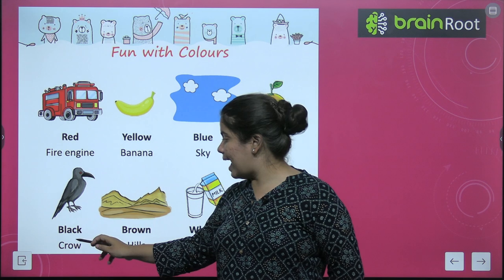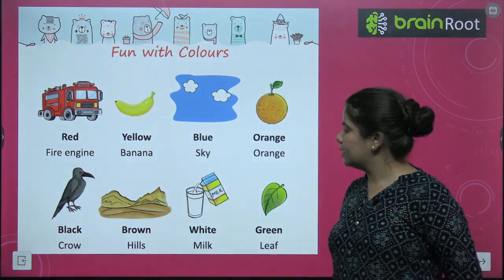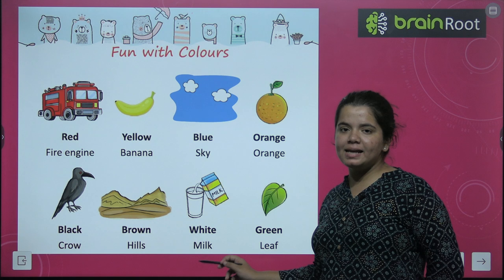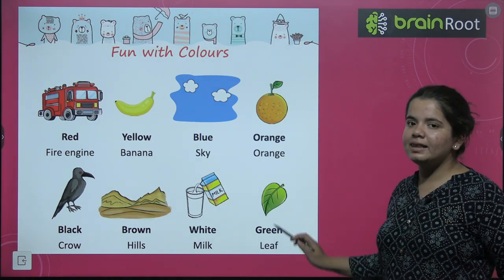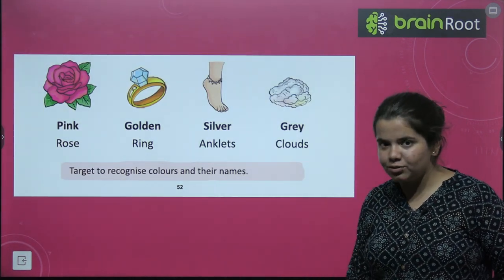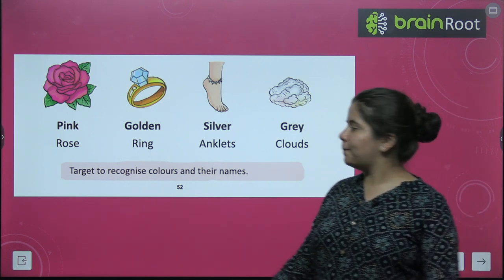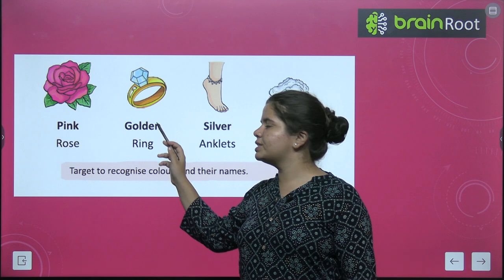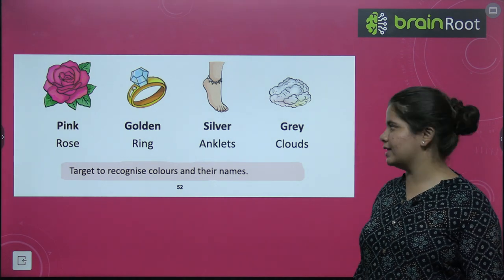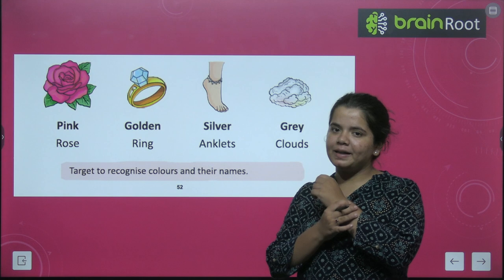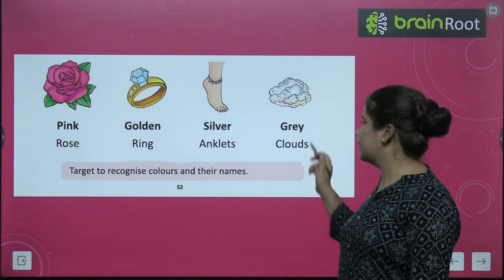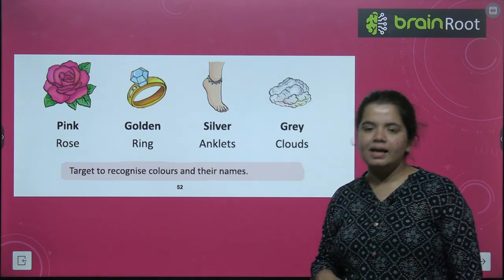Next is a black crow — this crow is black. Next we have brown hills. White milk. Green leaf — the leaves you see on plants are green. Pink rose. Golden ring. Silver anklet — what you wear on your feet is called an anklet, just as what you wear on your wrist is a bracelet. Gray clouds.